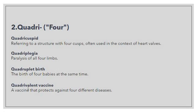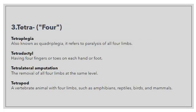Now let's see the next slide. We have the prefix 'tetra'. You might wonder why we need 'tetra' if we already have 'quadri'. In medical terminology, there are many terms used as alternatives. 'Tetra' is an alternative term for 'quadri', so both convey the sense of four. You may see some terminology using 'tetra' and some using 'quadri', so you should be aware of both alternatives. For example, 'tetraplegia' is also known as 'quadriplegia' — it refers to paralysis of all four limbs.